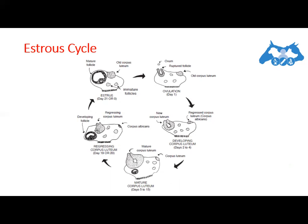Estrus is followed by a three to four day period referred to as metestrus. During this period the corpus luteum develops under the influence of LH and starts to produce increasing amounts of progesterone. The period between metestrus and the beginning of the regression of the corpus luteum is referred to as diestrus.